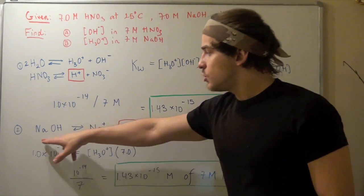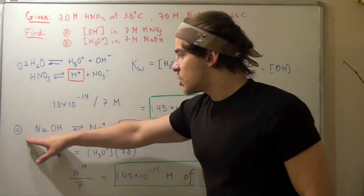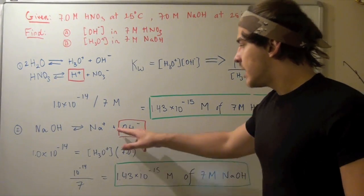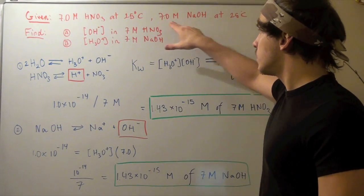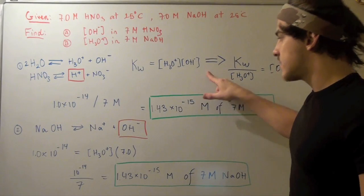Let's do part 2, part B. Sodium hydroxide dissociates into sodium and hydroxide. So this must be our base. Our 7 molar concentration now refers to the concentration of hydroxide.